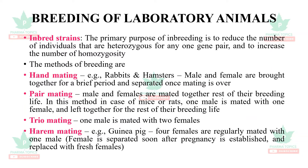The four methods of breeding are: hand mating — preferable in rabbits and hamsters, where male and female are brought together briefly and separated once mating is over; pair mating — one male mated with one female, left together for the rest of their breeding life, used in mice and rats; trio mating — one male mated with two females; and harem mating — applicable in guinea pigs, where four females are regularly mated with one male and the female is separated soon after pregnancy is established.